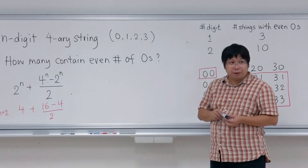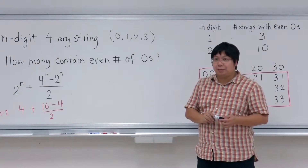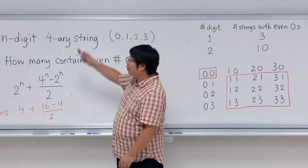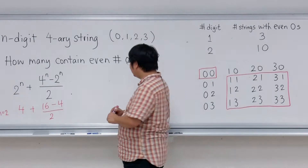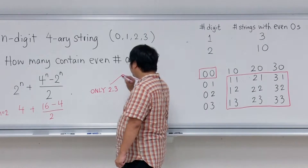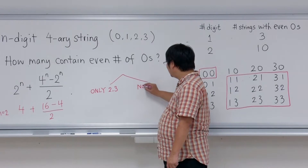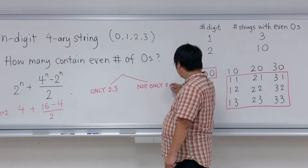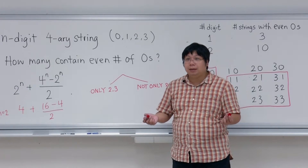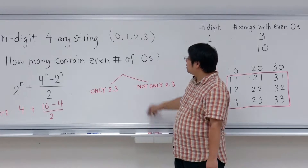This is a question from Professor Liu's textbook. He tries to divide the quaternary strings into two different groups. The first group contains strings with only twos and threes — no zeros or ones. The second group is strings that are not only twos and threes, meaning they must have some zero or some one.